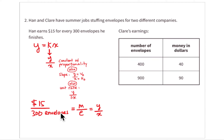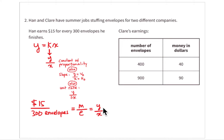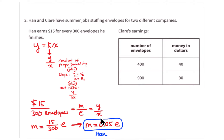Han makes $15 for stuffing 300 envelopes, so that's money per envelope — $15 per 300 envelopes. That is y over x, where money (m) is the y-value and the number of envelopes (e) is the x-value.